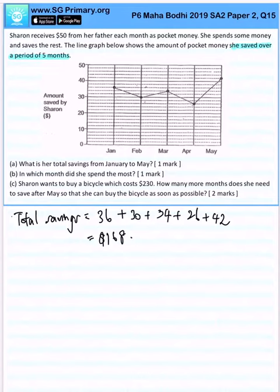The answer for part (b) would be April. For part (c): Sharon wants to buy a bicycle which costs $230. How many more months does she need to save after May so that she can buy the bicycle as soon as possible?